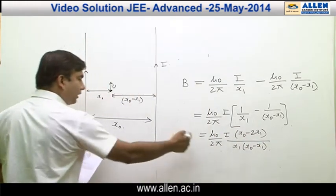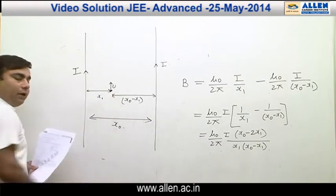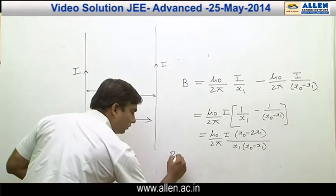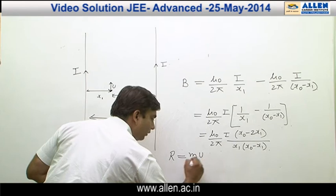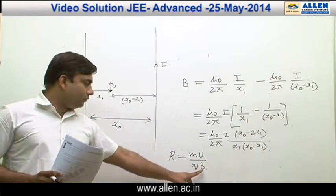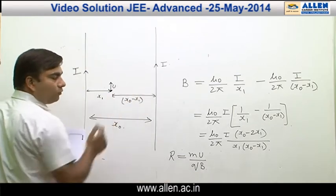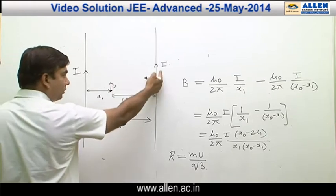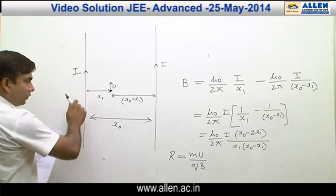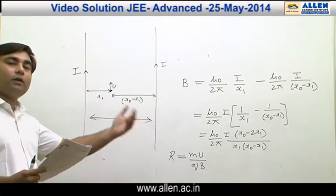Because of this resultant magnetic field inside the plane of the board, forces act on the particle and the particle follows a circular path. The radius of curvature is given by m times u divided by q times B, meaning the radius of curvature has an inverse dependency on magnetic field. In the second case, when the direction of current in one wire is reversed, the magnetic fields at this location will now add up instead of subtracting.